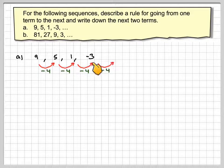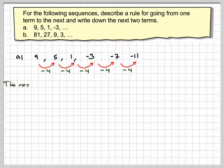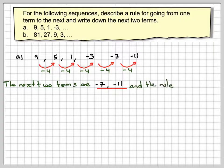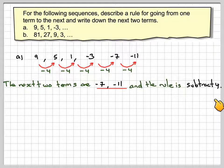So you're carrying on that sequence. Minus 3, minus 4 makes minus 7 and then minus 7, minus 4 makes minus 11. So the next two terms are minus 7 and minus 11 and the rule is subtract 4.